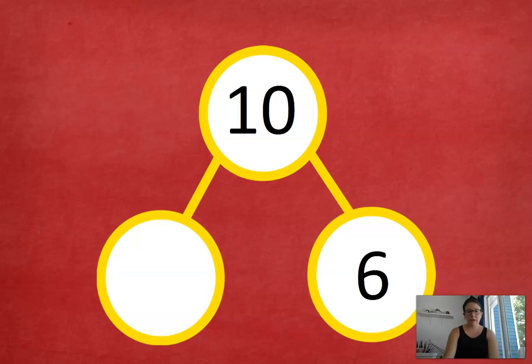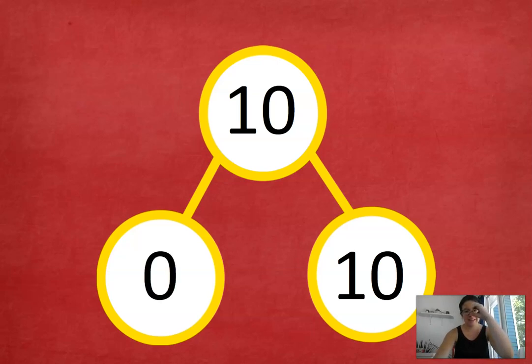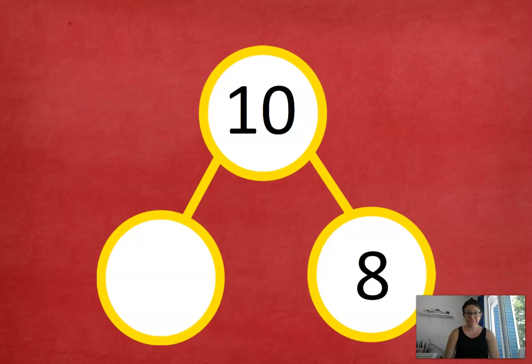We have a 6 in our number bond. It's one of our parts. What's the other part that's going to get us to 10? 4. Very good. You're getting good at this. You're getting the hang of it. Tricky one. We have 10 in our number bond. What's the other part that we need to get to 10? Do we need any more? So, we're going to put a nice 0 in there. Very good. 8 plus what is going to get us to 10? What's our other part? 2. Very good.